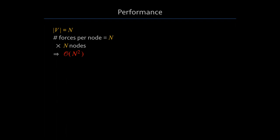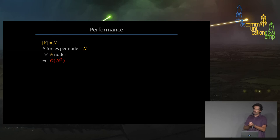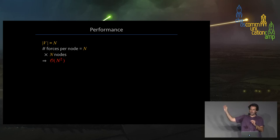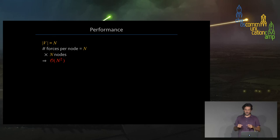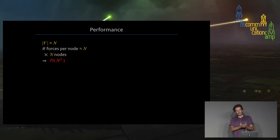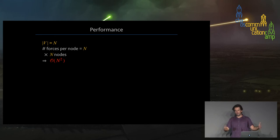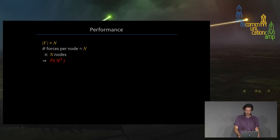What about performance? If we call N the total number of vertices in the graph, then for each node we have to compute forces from all the other N nodes, and we do that for each of the N nodes, so overall we have calculations on the order of N squared. That's marked in red because it's not good performance — it doesn't scale well. If the graph is ten times bigger, the number of calculations is a hundred times more. If the graph gets a hundred times bigger, the time needed is ten thousand times bigger. We would prefer a more mild scaling.